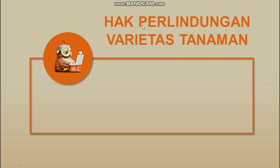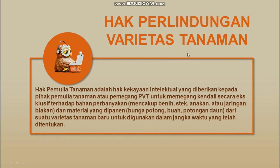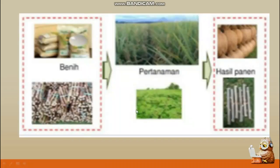Hak kekayaan industri yang ketiga adalah tentang hak perlindungan varietas tanaman. Definisi dari hak perlindungan varietas tanaman adalah hak kekayaan intelektual yang diberikan kepada pihak pemulia tanaman atau pemegang PVP (Perlindungan Varietas Tanaman) untuk memegang kendali secara eksklusif terhadap bahan perbanyakan — dalam hal ini bisa mencakup benih, setek, anakan, atau jaringan biakan — dan material yang dipanen seperti bunga potong, buah, potongan daun, dari suatu varietas tanaman baru untuk bisa digunakan dalam jangka waktu yang telah ditentukan. Contohnya mulai dari pembelian, hasil tanaman, hingga hasil panennya — biasanya ada yang super, F1, indukan, dan sejenisnya.